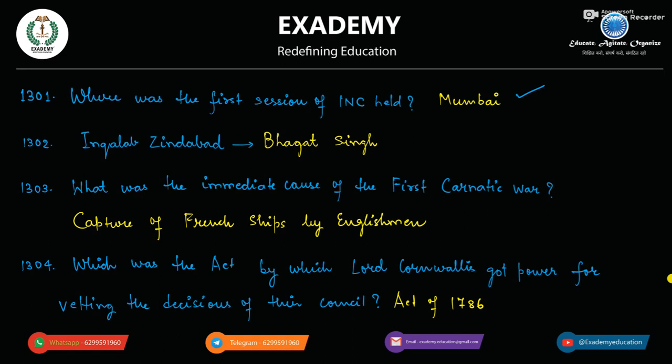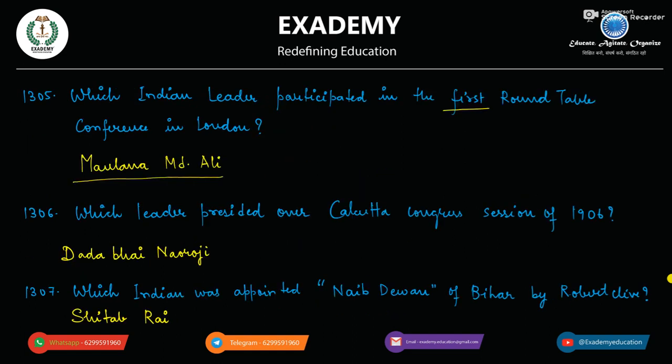Which act gave Lord Cornwallis the power for vetting the decisions of the council? Act of 1786.